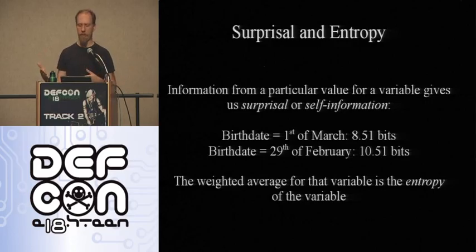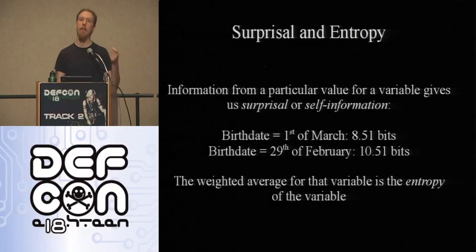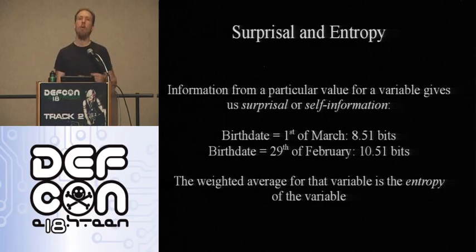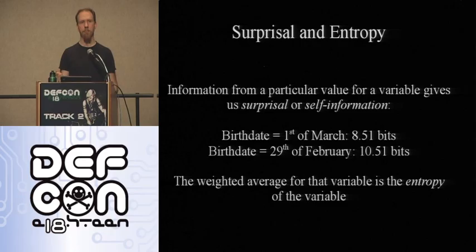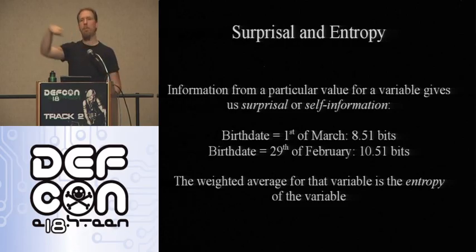If we talk about a random variable like someone's birth date, you can measure the amount of information you learn when you learn a particular value. If you learn my birth date is the first of March, you've learned 8.51 bits about my identity. However, if you learn my birth date is the 29th of February on a leap year, you get a bit more information — about 10.51 bits — because the likelihood of that is only a quarter of any other birthday. We call that the surprisal, or self-information, of a fact you've learned.